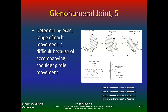Determining exact range of movement is difficult because of accompanying shoulder girdle movement. You should have about 60 degrees of backward extension and about 120 degrees of pure glenohumeral forward flexion — the last 60 degrees is your scapula. Similarly for abduction, 120 degrees is pure glenohumeral motion and the other 60 degrees is scapular. Where people often lack is scapular or AC joint and clavicle motion, not glenohumeral. You need to know where the limitation actually is before starting rehab.